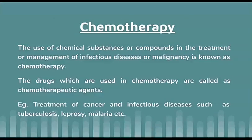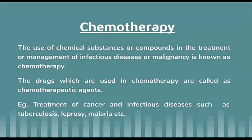The next important branch is Chemotherapy. The use of chemical substances or compounds in the treatment of infectious diseases or malignancy is known as Chemotherapy. The drugs used in chemotherapy are called chemotherapeutic agents. For example, treatment of cancer is known as chemotherapy, or treatment of various infectious diseases such as TB, malaria, and AIDS is also called chemotherapy.